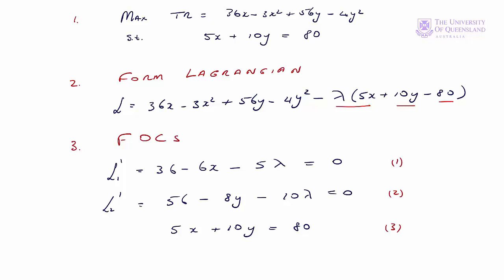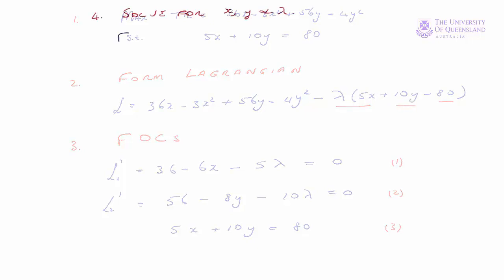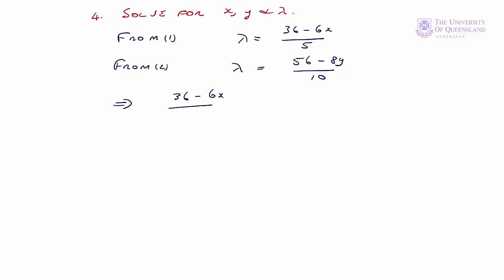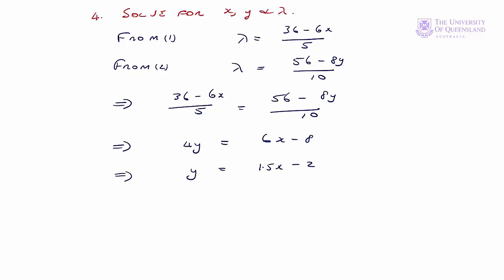For the third equation we state the constraint: 5x plus 10y equals 80 — we can number those equations 1, 2, and 3. The fourth step is to solve for x, y, and lambda. From equation 1 we solve for lambda in terms of x: lambda equals 36 minus 6x over 5. From equation 2 we solve for lambda: lambda equals 56 minus 8y over 10. Since both right-hand sides equal lambda, they're equal to each other, implying 36 minus 6x over 5 equals 56 minus 8y over 10. Simplifying: y equals 1.5x minus 2 — call that equation 4.